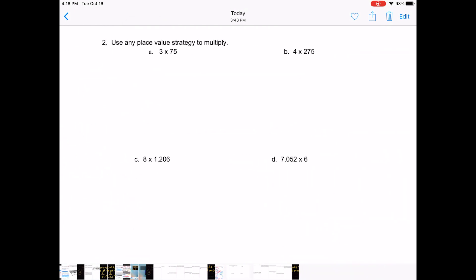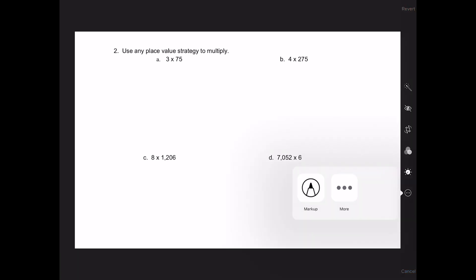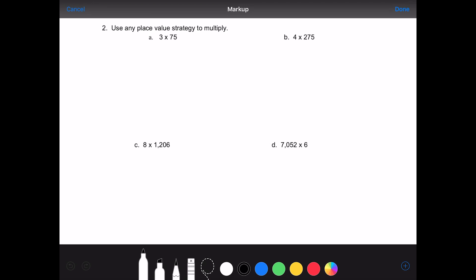Number 2 is nice because it says you can use any place value strategy to multiply. So I can do it any way I want, which I love. So I'm going to start with 3 times 75. I like to write it up and down. This one I can go ahead and do the standard algorithm. If I go 3 times 5, that's 15. The 5 goes in the 1's place and I bundle the 1, and I bundle it or I carry it or I move it to the 10's column. I'm going to add that later.